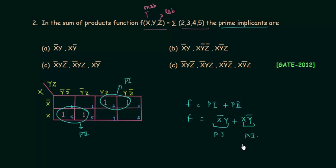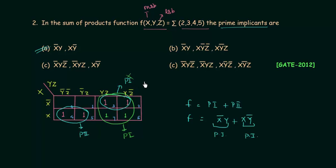So there are two prime implicants and option A is the correct option. The only important thing in this problem is the definition of prime implicants. Prime implicants are the largest possible group of ones. As you can see, this group of ones is the largest possible group — you cannot make any other group bigger than this. For example, if there were two more ones, you could form a group of four, making that the prime implicant and the smaller group not a prime implicant.